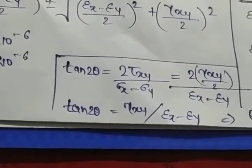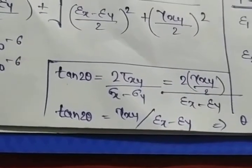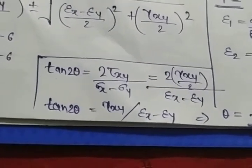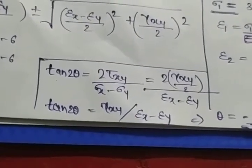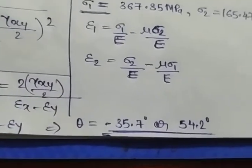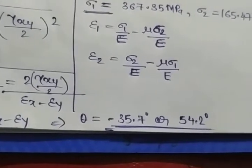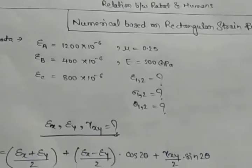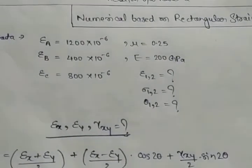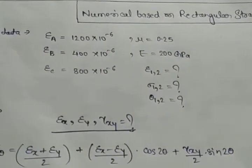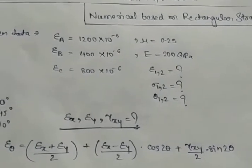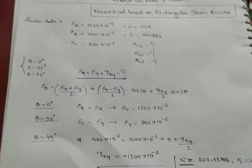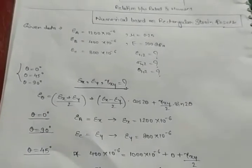We now substitute epsilon_x, epsilon_y, and gamma_xy into the angle formula. Because of the ± under the square root, we get two values: theta = −35.7° and theta = 54.2°. Overall, from this numerical we have found three things: epsilon_1,2 (principal strains), sigma_1,2 (principal stresses), and the principal angles. This completes the rectangular strain rosette numerical.